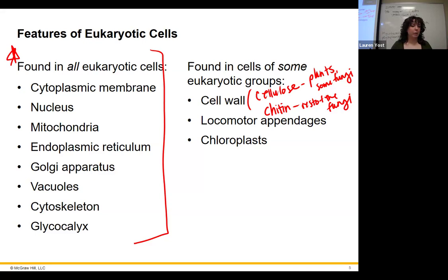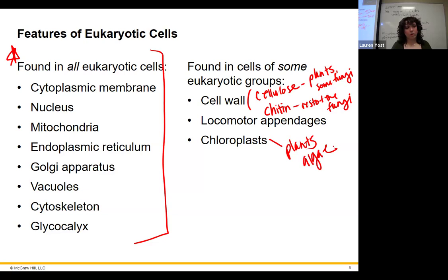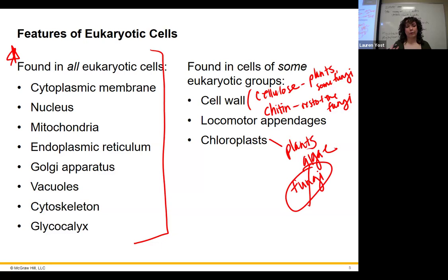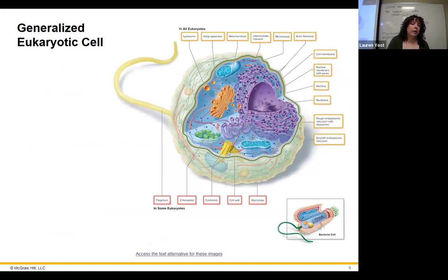Chloroplasts have their own DNA and everything, like we talked about with the mitochondria. That's pretty compelling evidence that they used to be other organisms. Chloroplasts are found in plants and algae — not fungi. People get confused because they think of fungi as being a lot like plants, but fungi don't have chloroplasts. That's one thing that makes them quite different from plants.